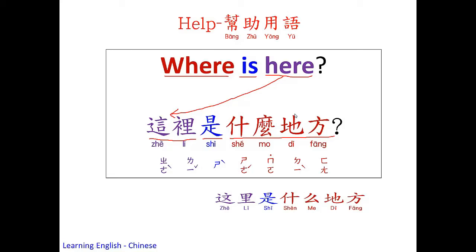这里是什么地方. One more time: 这里是什么地方. Where is here?